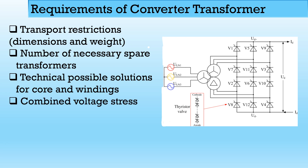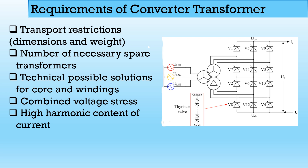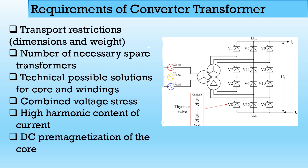There are combined voltage stresses — not only AC voltage stress but also stress due to DC voltage. The insulation of the transformer must withstand both AC and DC voltages. There is also high harmonic content of the current, since the power electronic converter at the secondary side introduces high harmonics into the system. Additionally, there is DC premagnetization of the core, because the primary carries a square wave type of current, which may cause DC premagnetization current in the core.